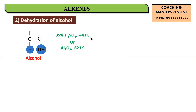What happens is: OH from the first carbon and H from its adjacent carbon are removed in the form of a water molecule. So H and OH are removed as water. You are left with two carbons and four hydrogens, and instead of a single bond, you will get a double bond between those two carbon atoms. That means from an alcohol by dehydration, you have produced an alkene.